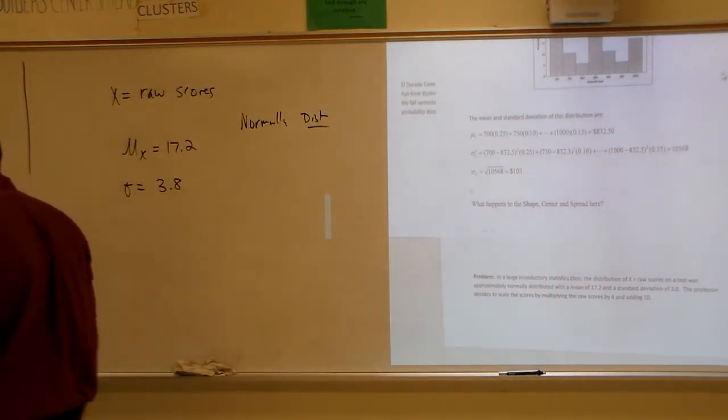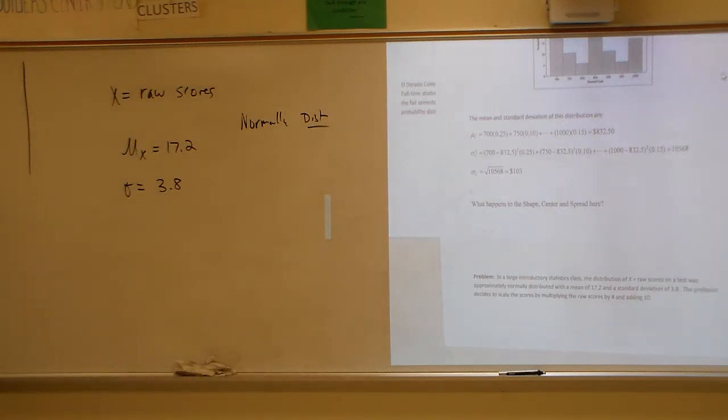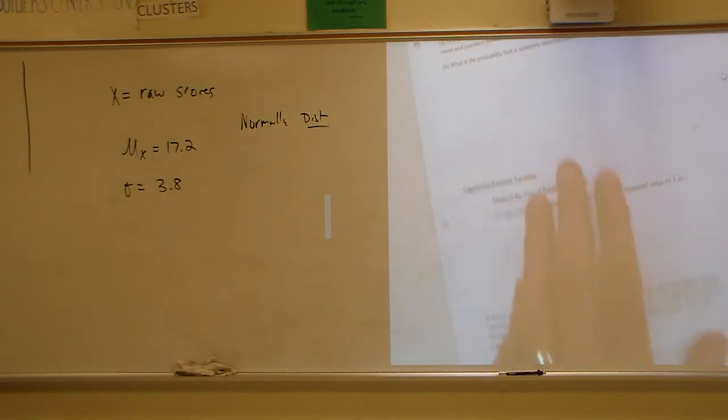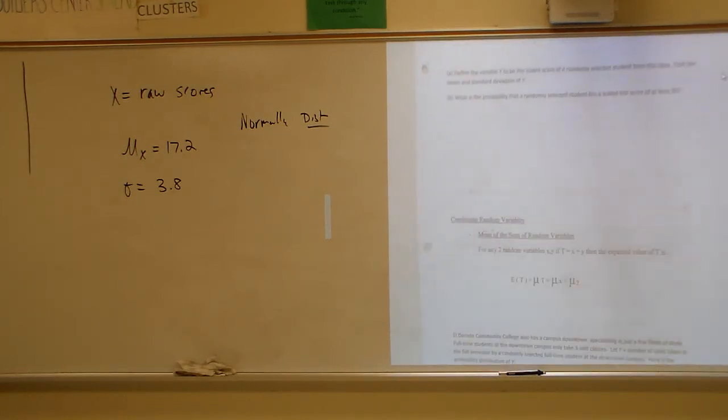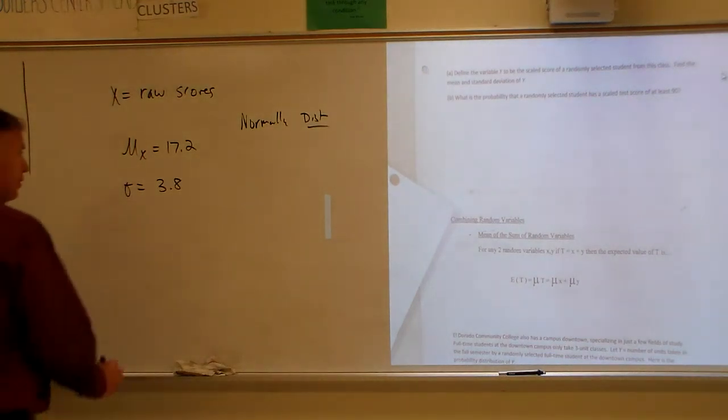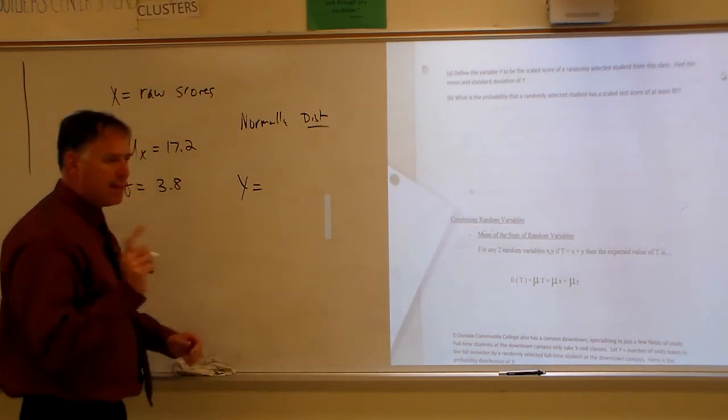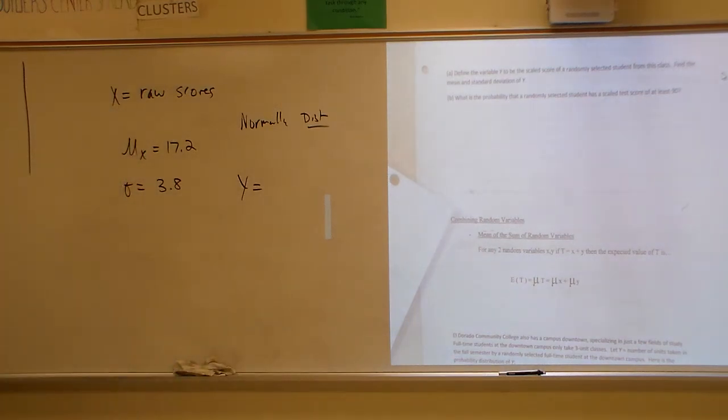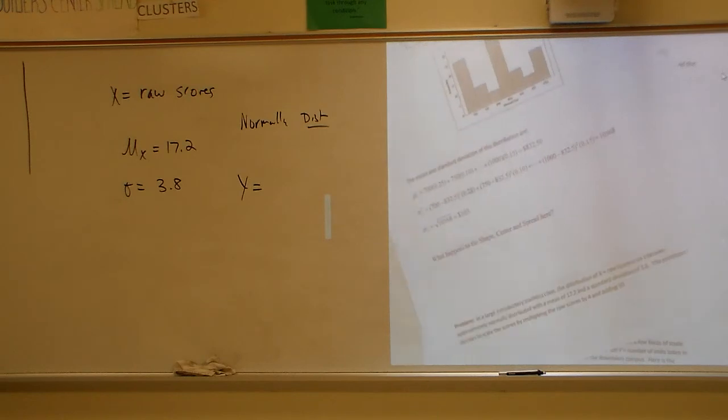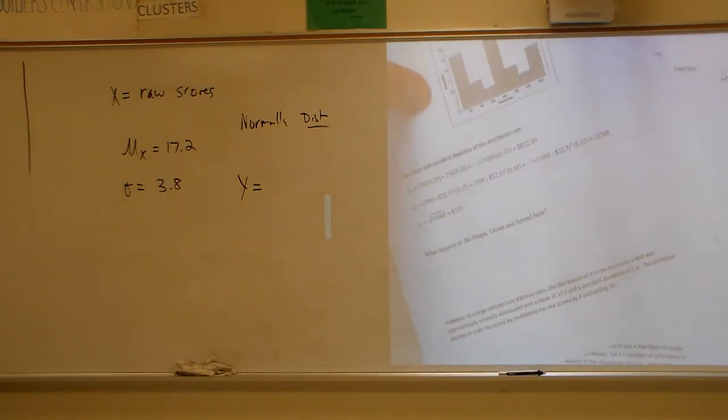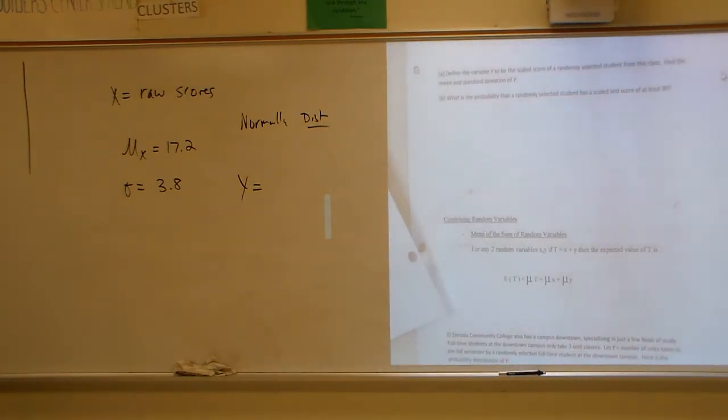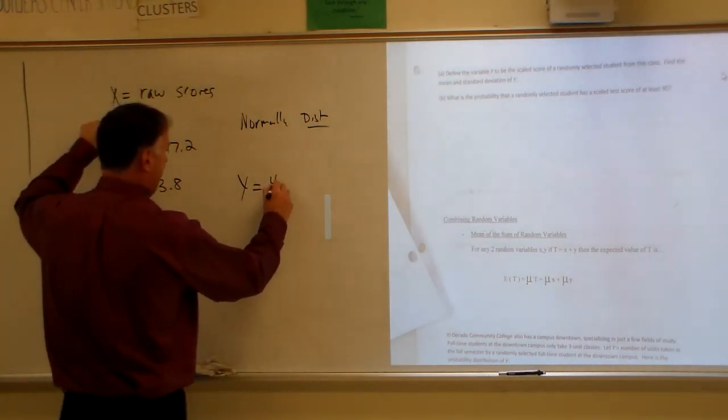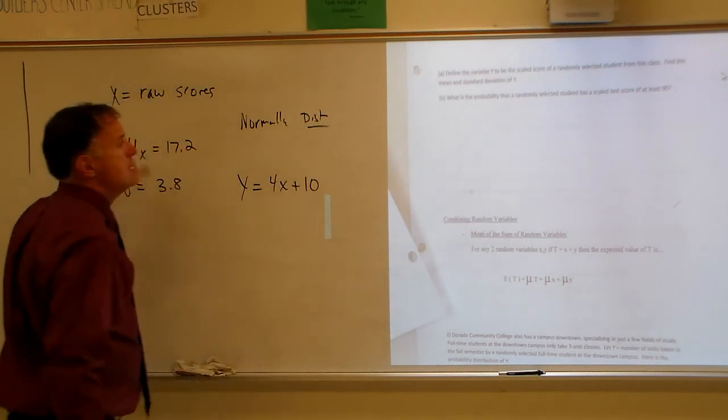Well, we need to come up with a random variable for this. Let's see. x is the raw score. So we go here. We have all the information we need. We're here. It says, define the variable y as the scale score. So y. And then it told me that they wanted me to multiply the raw scores by 4 and add 10. Well, the raw scores are x. So I write that as 4x plus 10.